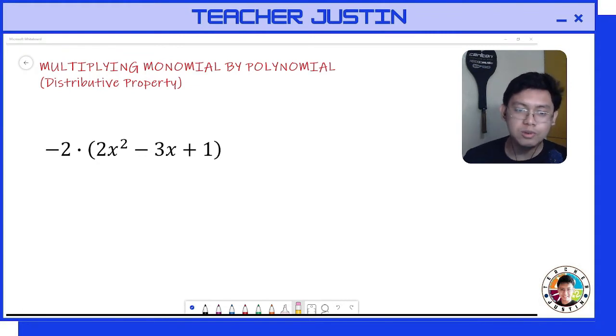So here we have negative 2 as our monomial and we have 2x squared minus 3x plus 1 as our polynomial. Let's apply the distributive property. Let's multiply negative 2 to our first term of our polynomial which is 2x squared.